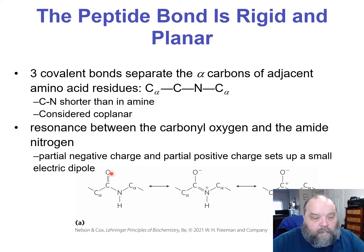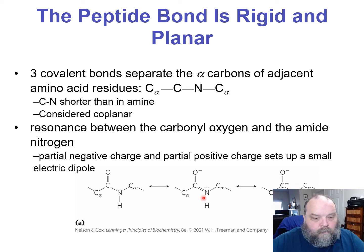Where does this double bond come from? It's here from what is now a carbonyl. The charge resonates back and forth between the nitrogen and the carbon. They are now electron short, proton heavy. So that double bond goes away, one of them gets it, the other is short, and it goes back and forth — that's the resonance.